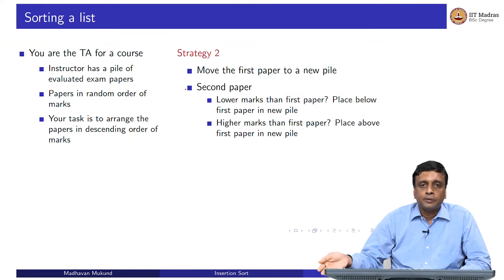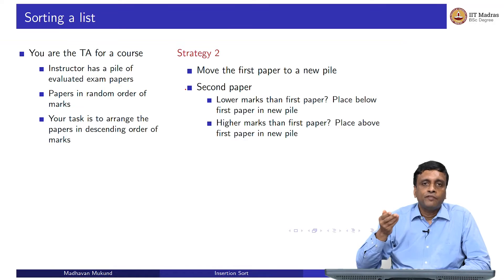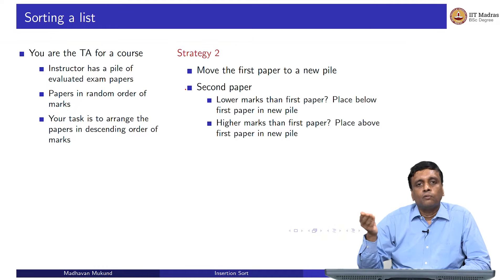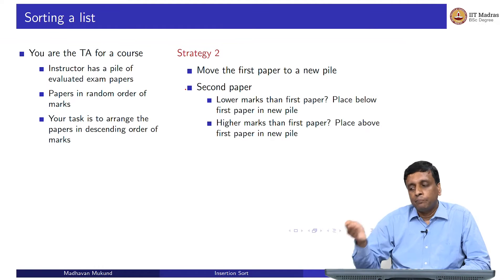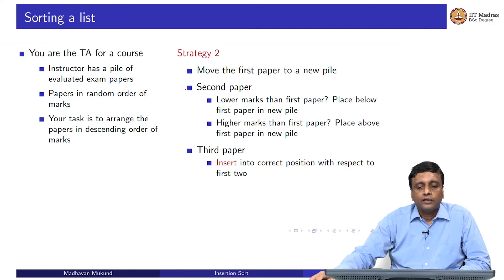If you want the minimum at the bottom of the pile and the second paper is smaller, you have to slide it below. If it is bigger, you put it on top. Depending on the value of the second paper compared to the first paper, you have to put it in the right position.